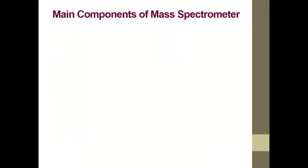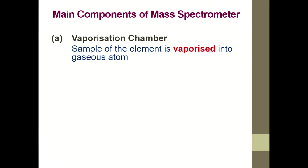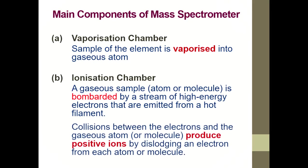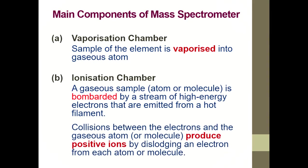We are going to look now at the main components of mass spectrometer. This is the text. You can find this in your page 21. At the vaporization chamber, the sample will be vaporized. In ionization chamber, the gases sample will be bombarded by high energy electron to produce positive ions.